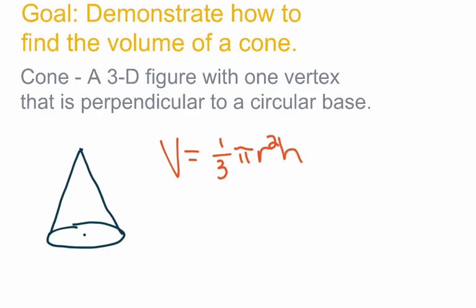If you remember from volume of a cylinder, pi R squared H without the one-third is the formula for the volume of a cylinder. When you're taking the volume of a cone, you take the volume of a cylinder and divide by 3, or multiply by one-third. Let's take a look at a few examples.